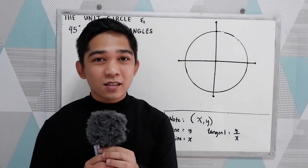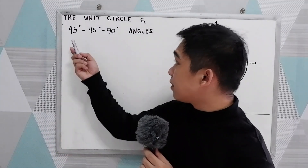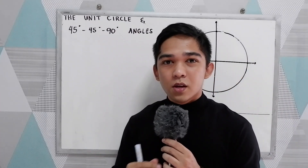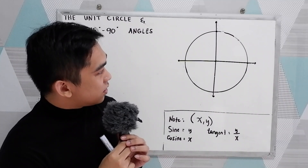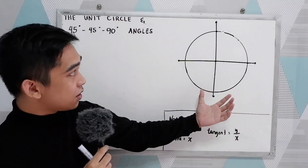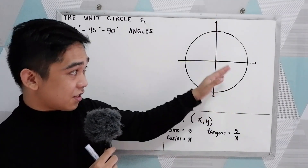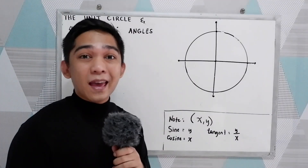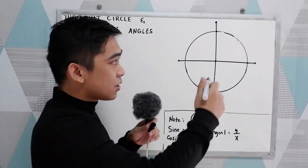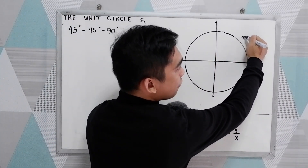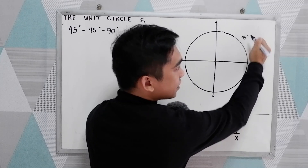Good day everyone. Today we will be discussing the unit circle and the 45-45-90 degree angles. We have our circle here with our coordinate system. Let us locate the 45-45-90 degree angle using quadrant 1, so let's say we have 45 degrees here.